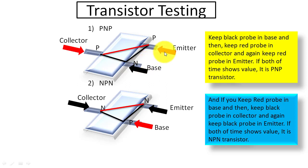Change red probe from emitter to collector. If collector also shows value, then it is PNP transistor.